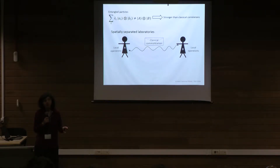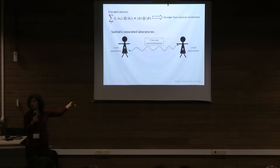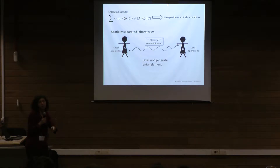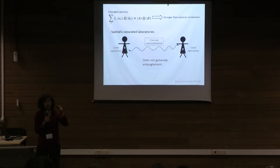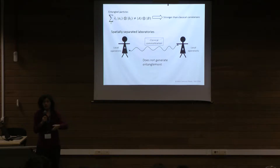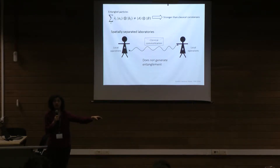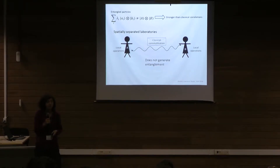Because we can't create entanglement — this is exactly the case when we want to use entanglement that we've already created — and because LOCC doesn't generate entanglement, we can build it as our free operations. So if I'm given state psi but I need state phi for my protocol, maybe I can convert psi into phi using LOCC, in which case psi is more entangled than phi because it's more useful. Whereas if I can't do it the other way around — if I'm given the less entangled state but I needed the more entangled state — I'm a little bit stuck.